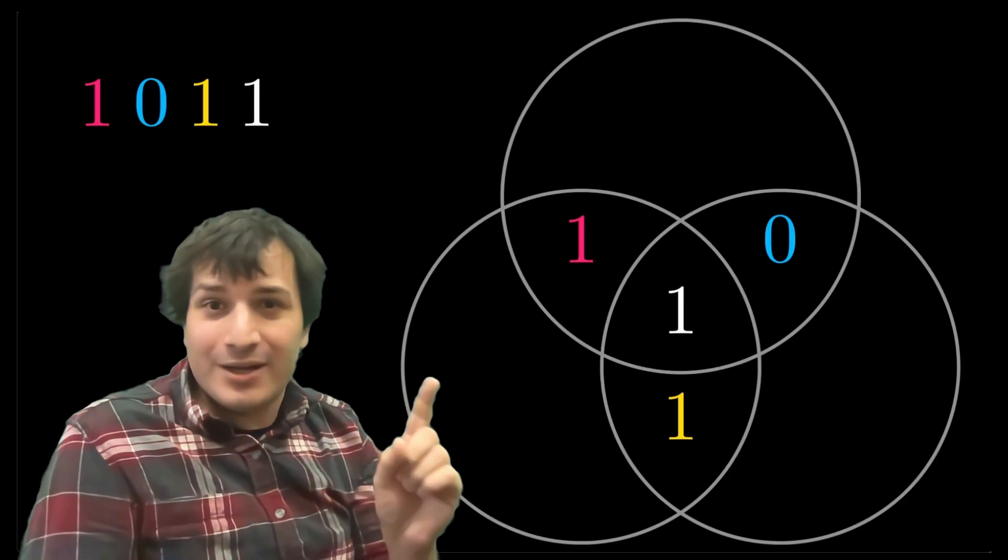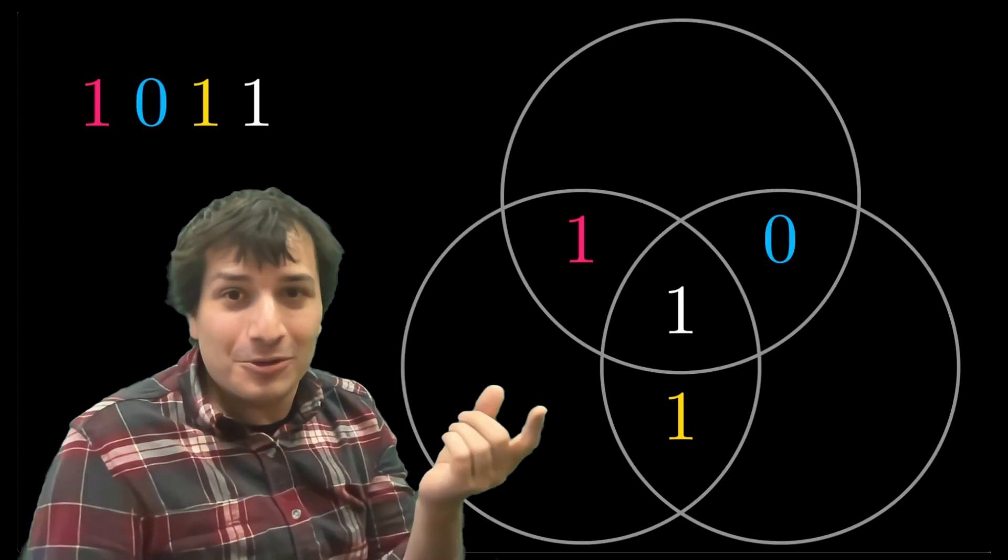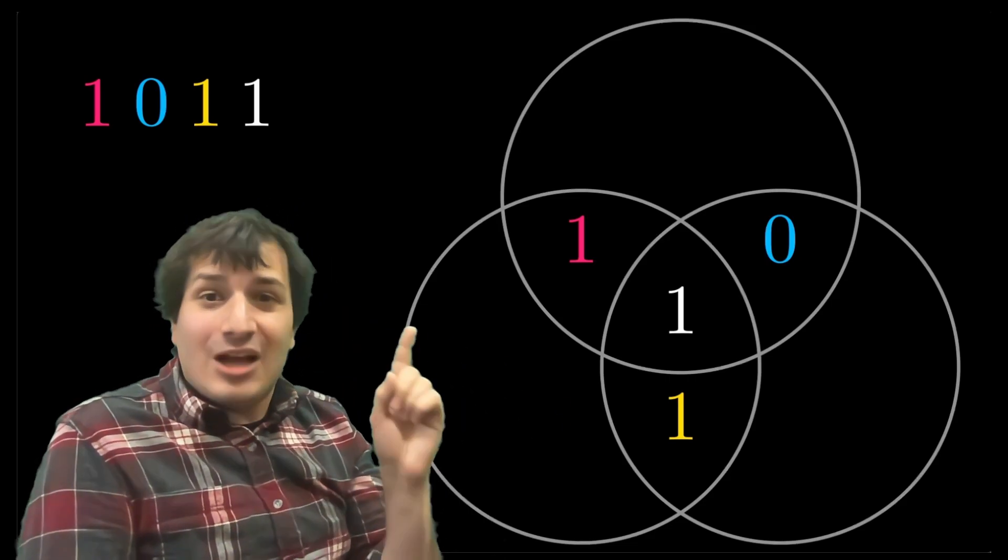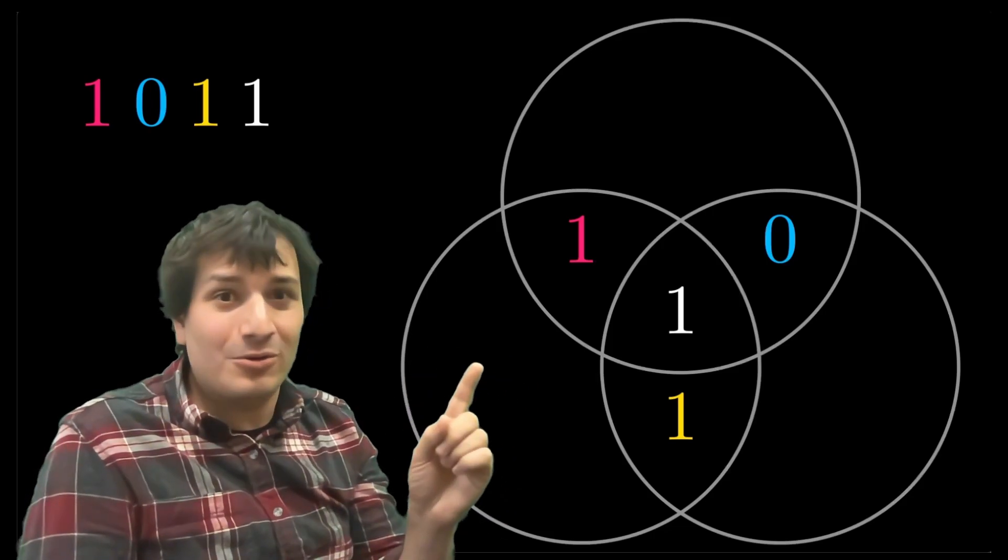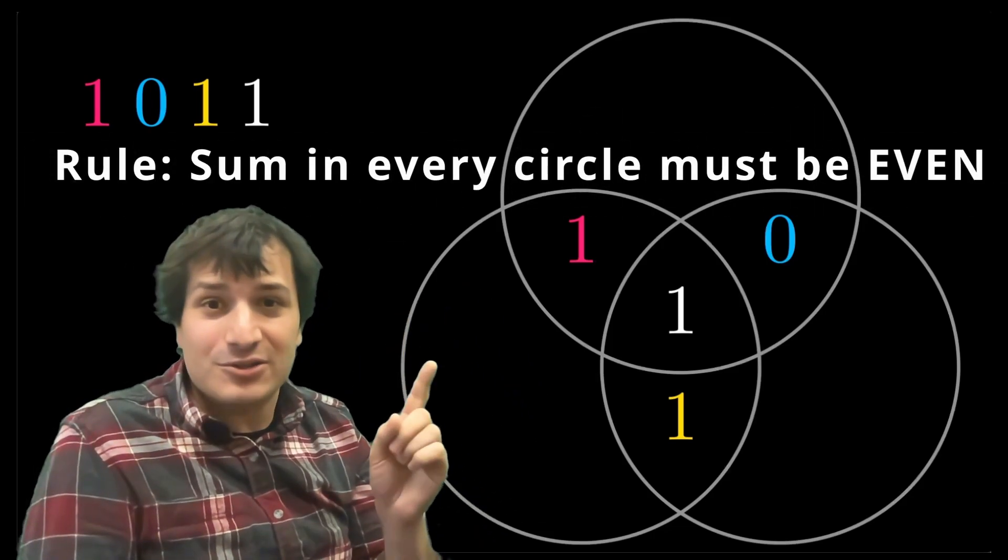And the one very important rule, in fact, the only rule for this code is that the sum of the digits inside each circle must be even. That's the only rule. The sum of the digits in every circle must be even.